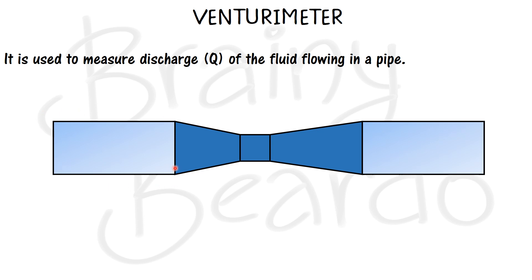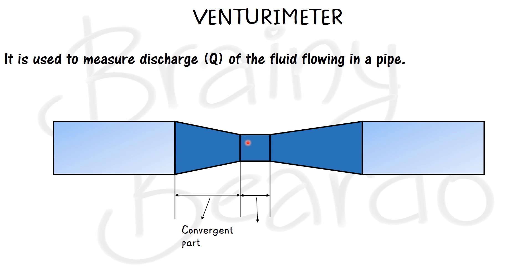This Venturimeter has three major parts. The first part, where the cross-section area reduces from the cross-section area of the pipe to a minimum cross-section area, is called the convergent part. The second portion, where the minimum cross-section area is maintained, is called the throat. The third part, where the cross-section area increases from the throat area back to the pipe area, is called the divergent part.